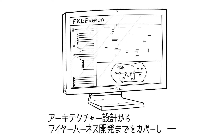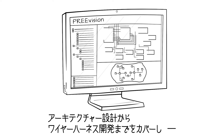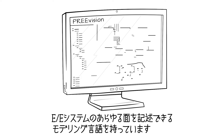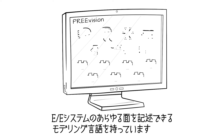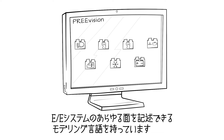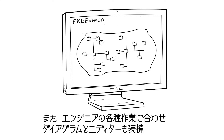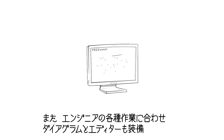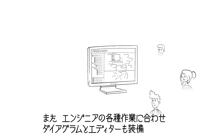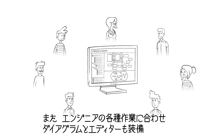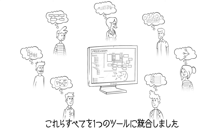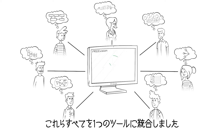PreVision supports the entire EE development from architecture design all the way through to the final wiring harness. It offers a comprehensive modeling language to describe all aspects of EE systems. All engineers involved in the development process find tailored diagrams and editors for their work, all in one integrated tool.